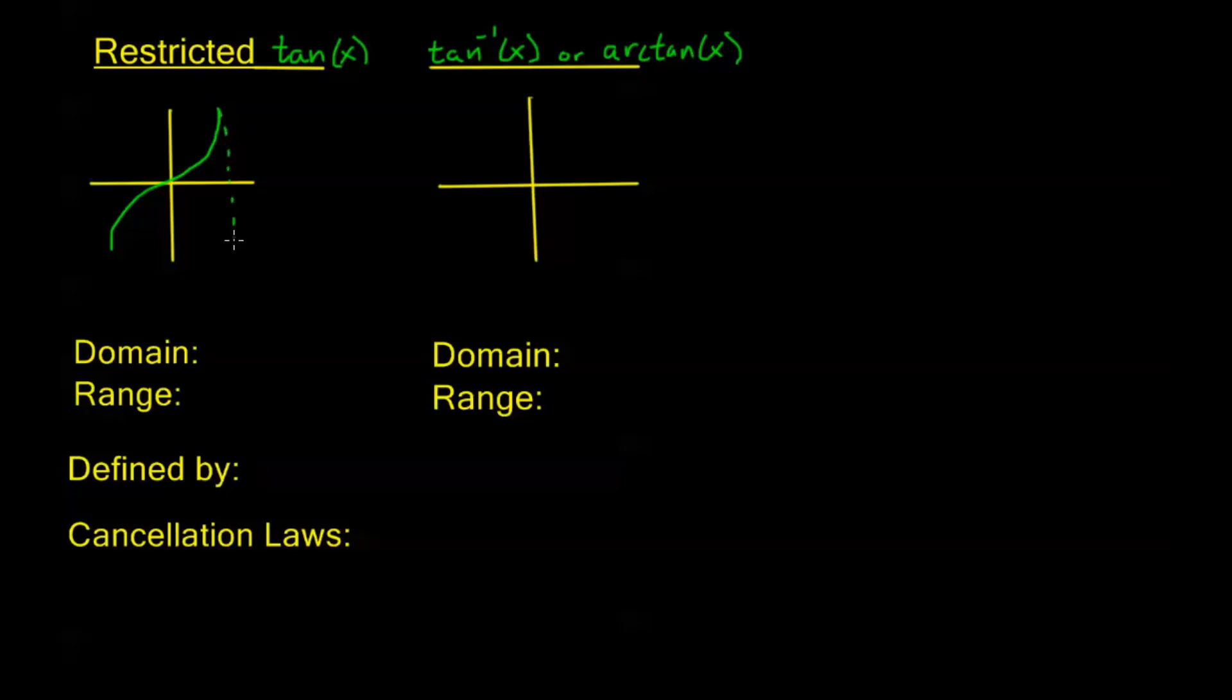We know that tangent has these asymptotes at pi over 2 and at negative pi over 2, don't we? But look, if I do a horizontal line test here with my tangent function, my horizontal lines don't cross my tangent function anywhere twice. So for each value of y here, I have a unique value of x, and for each value of x in one period, I have a unique value of y.